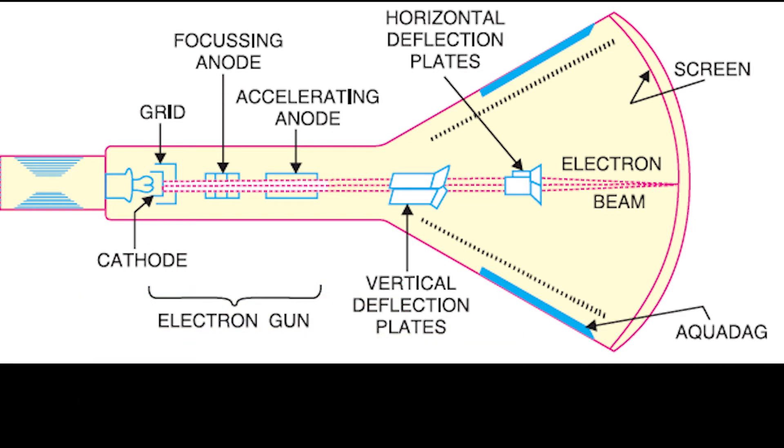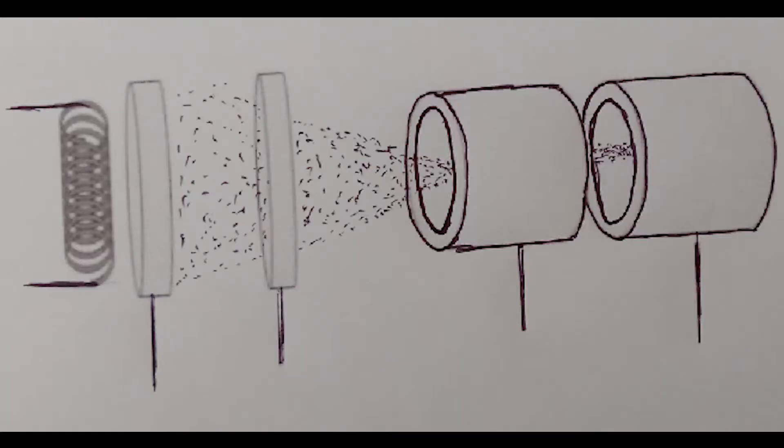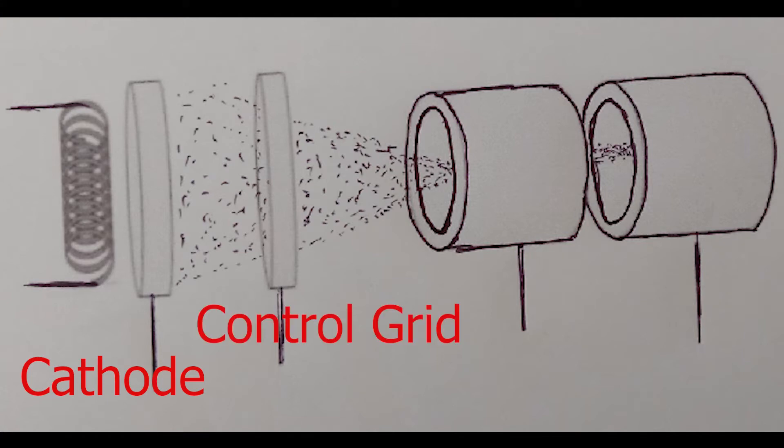Let us look at the first major part, that is the electron gun. It consists of the following parts: the cathode, the control grid, and two cylindrical anodes.